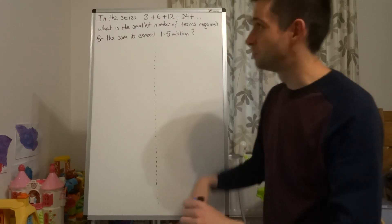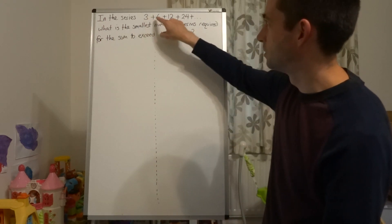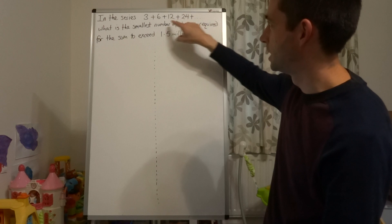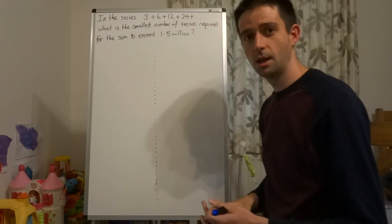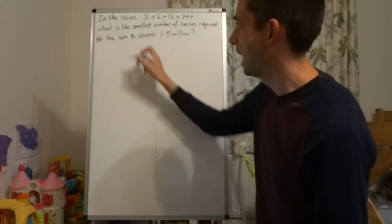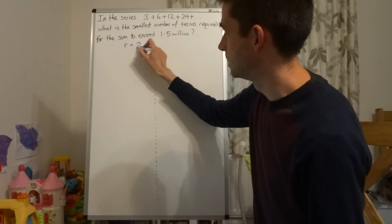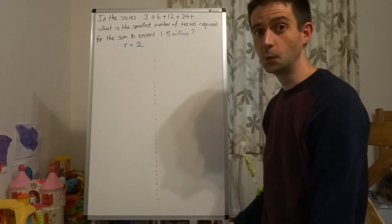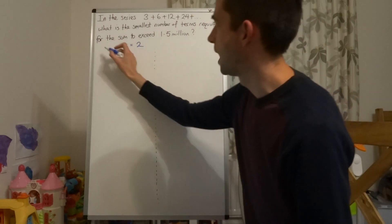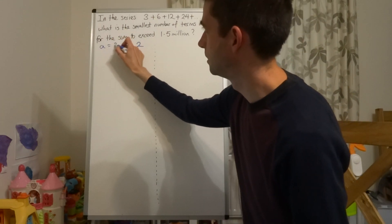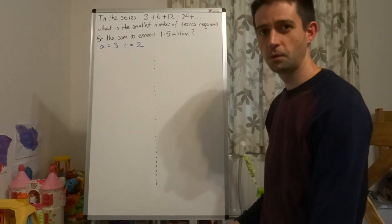No, it's because you multiply by a constant number, a common ratio, to get the next term each time, and in this case we can see that that common ratio r equals 2. And the first term is a equals 3.